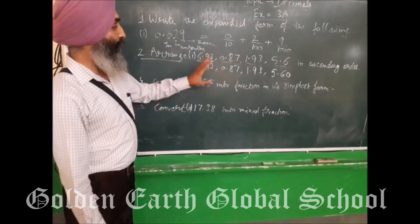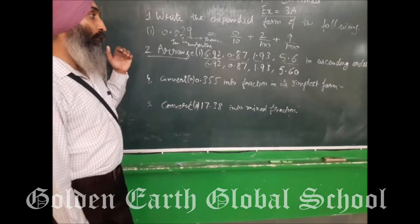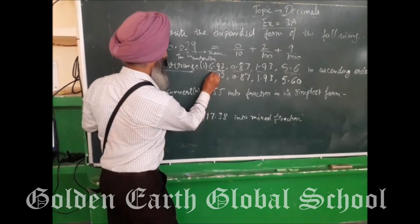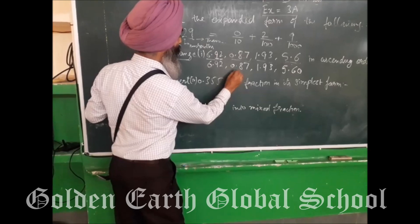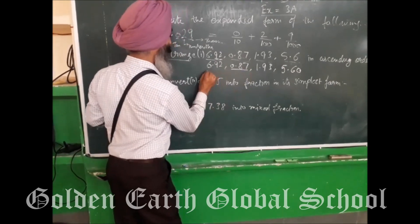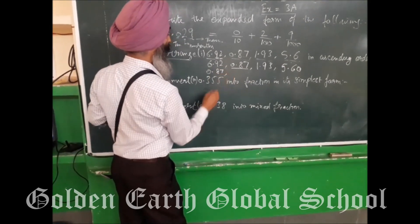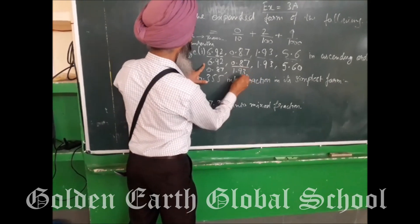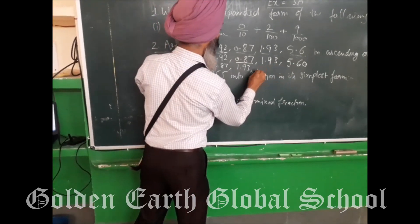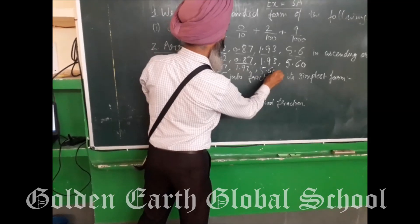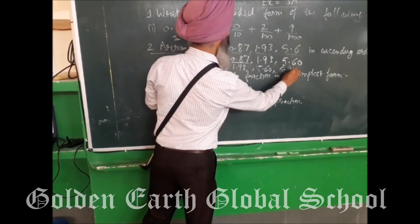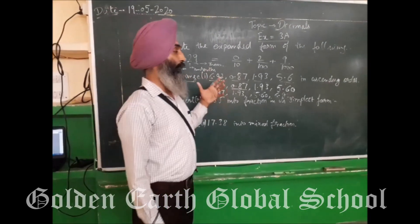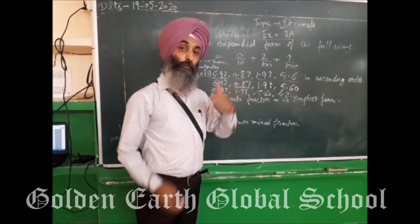Now we will convert to ascending order. Ascending order means small to bigger. So this is the smallest one — write it as the first number. Then after this, 1.93. After this, 5.60, and after this, 6.92. So this is the method for arranging decimal numbers in ascending order.